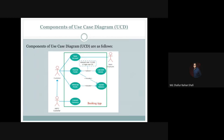Here is an example of how a use case diagram looks. The components present are: an actor, a use case, a relationship, and a system boundary. We have a stick figure representing a customer, an NRFC customer, and a bank employee as actors. The system here is a banking app, and this is an example of a banking application use case diagram.